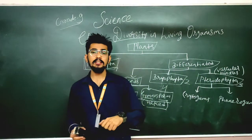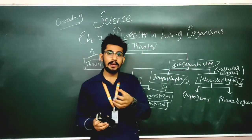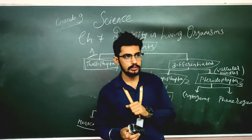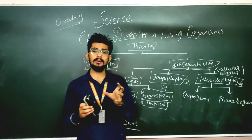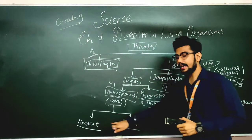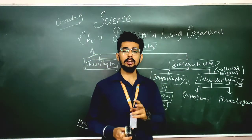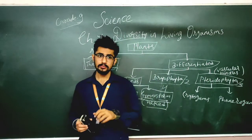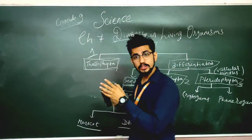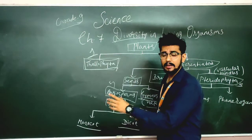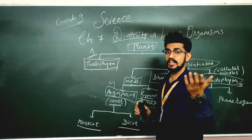In Angiosperm seeds, there is a food-storing structure present for the plants to grow easily, known as the cotyledon. Based on the cotyledon, Angiosperms are divided into two: Monocot, which has a single cotyledon, and Dicot, which has two cotyledons. Angiosperms are also known as flowering plants — they produce flowers, which can be fertilized to produce fruits. So fruits can be produced in Angiosperms because they have flowers.